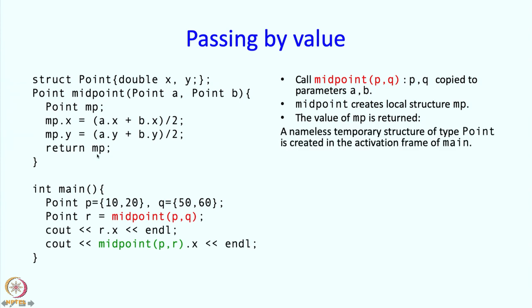A temporary structure of type point is created and that structure sort of stands in for this call and the members of mp are copied into that temporary structure. Or you can think of that entire structure is copied into that entire structure. And subsequently what will happen, main program will start executing again and this will be assigned to R. So mp is copied into the temporary structure and the temporary structure is copied into structure R. And then we can print R.x that is perfectly acceptable.